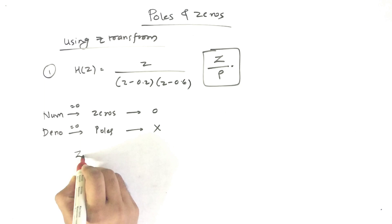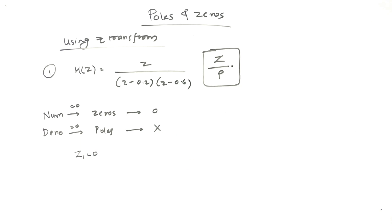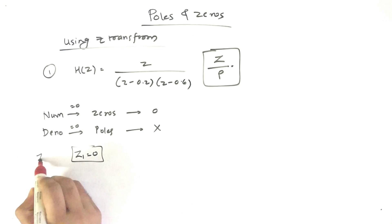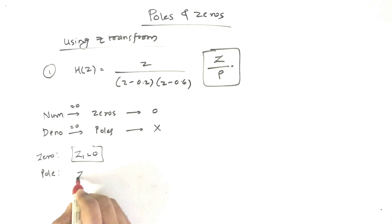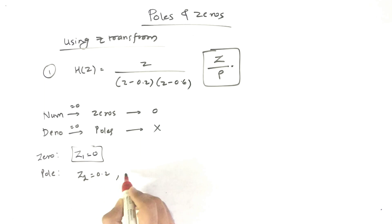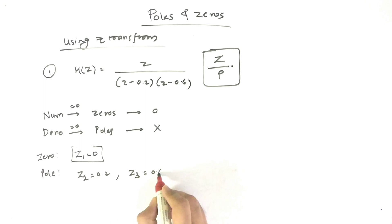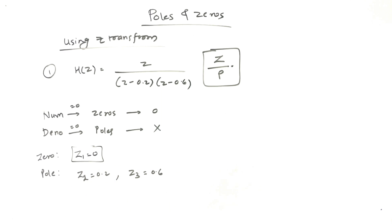So here, what are the zeros and poles? If we equate the numerator equal to 0, we get our first zero. If we equate the denominator equal to 0, we get the poles. Our first pole is 0.2 and the second pole is 0.6. These are the terms Z1, Z2, and Z3.